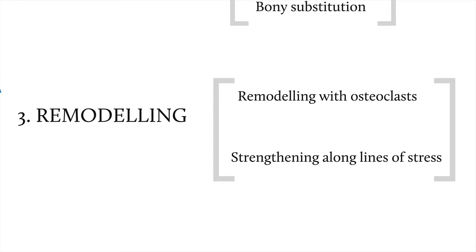The third phase is remodelling. The newly formed bone is larger than that which existed before the fracture, and it may obliterate the medullary canal. Remodelling with osteoclasts strengthens it along lines of stress on return of normal function, and this can return the bone to its original shape. Remodelling is best seen in children, but occurs to some extent in all healing.